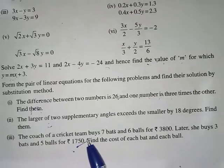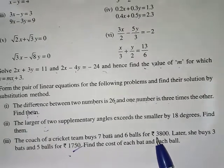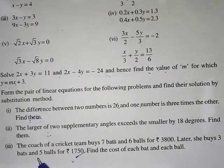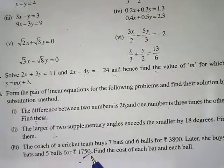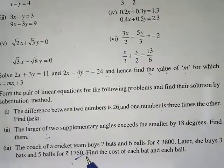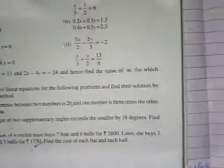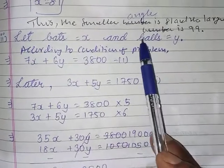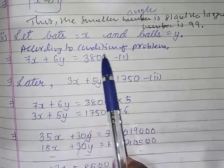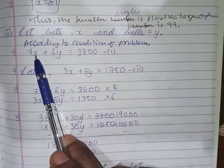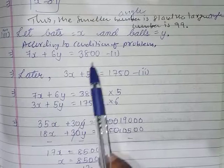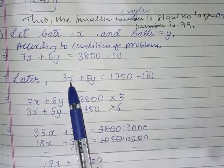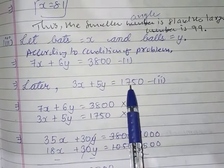The coach of a cricket team buys 7 bats and 6 balls for Rs. 3800. Later he buys 3 bats and 5 balls for Rs. 1750. Find the cost of each bat and ball. Let the cost of a bat be x and the cost of a ball be y. So 7x plus 6y equals 3800, and 3x plus 5y equals 1750.